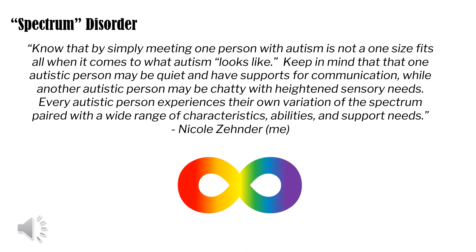Autism is a spectrum disorder. This means there is a range of variability in the type and severity of symptoms that individuals may experience, and it impacts individuals across gender, ethnicity, and socioeconomic background. All individuals with autism may not experience all of the characteristics typically associated with autism. Symptoms can look different from one individual to another, including the amount of support necessary to be successful in school, home, or the community. The infinity image at the bottom of this slide is a newly adopted symbol representing the autism community and neurodiversity, with infinite variations within the spectrum as well as the never-ending growth and ability of the neurodiverse community.